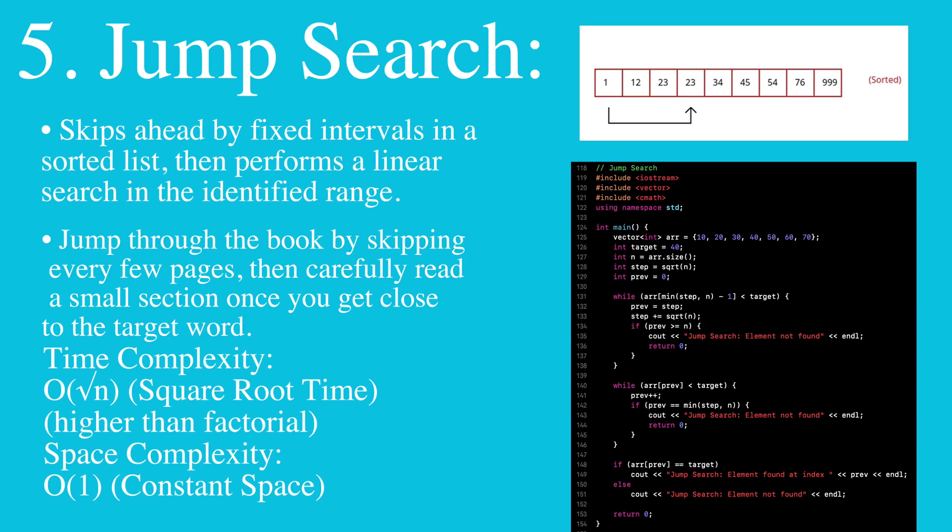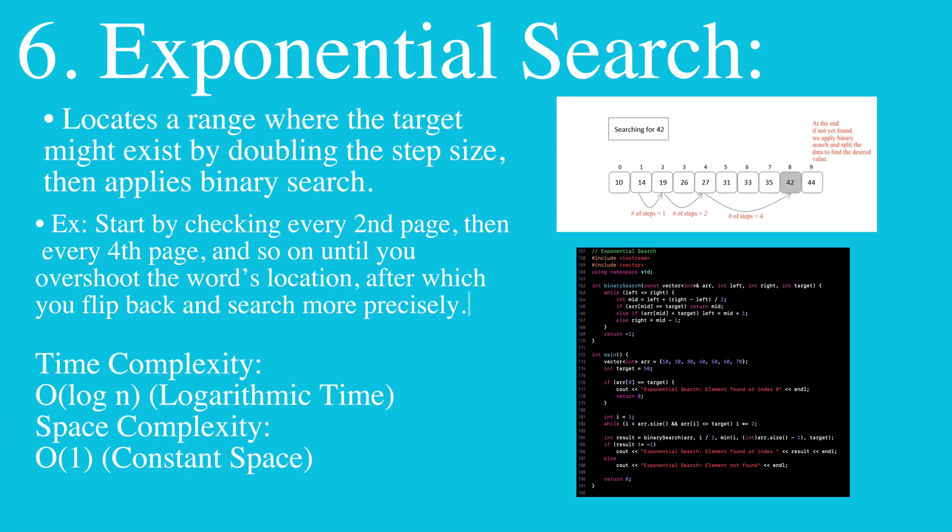Then we have jump search, where it is a search algorithm that skips ahead by fixed intervals in a sorted list, then performs a linear search in the identified range. Then we have exponential search, where we locate a range where the target might exist by doubling the step size, then applying binary search.